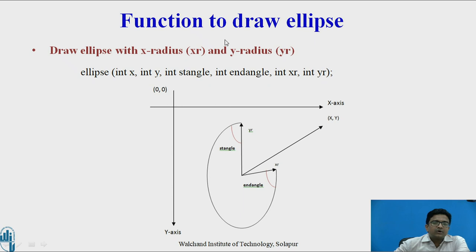The function to draw ellipse. While drawing ellipse, we require x radius and y radius. Ellipse requires int x, int y, that is the center point, after that int st_angle, start angle, int end_angle, int xr and int yr. xr and yr are nothing but x radius and y radius.